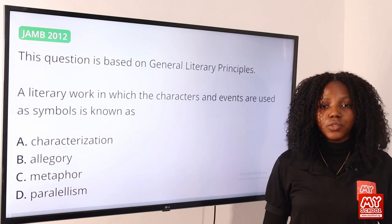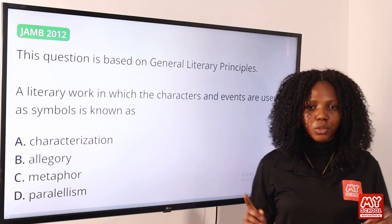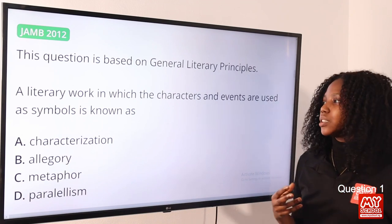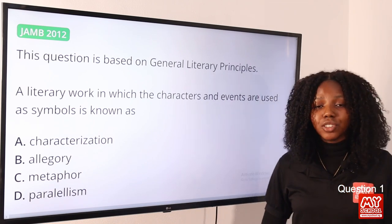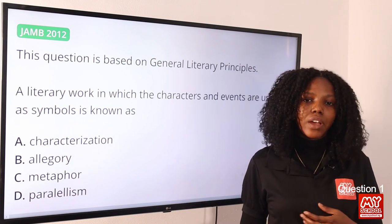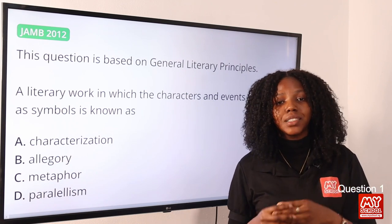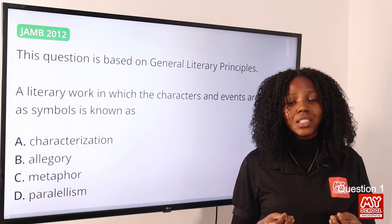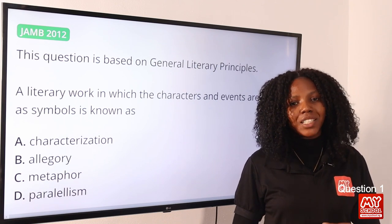Welcome back to my school channel. We'll solve questions one to twenty, beginning with question one. This question is based on general literary principles. A literary work in which the characters and events are used as symbols is known as — the answer is allegory. Allegory is the literary device in which characters, events, places, or images are interpreted to represent a hidden meaning, usually of political or moral significance.